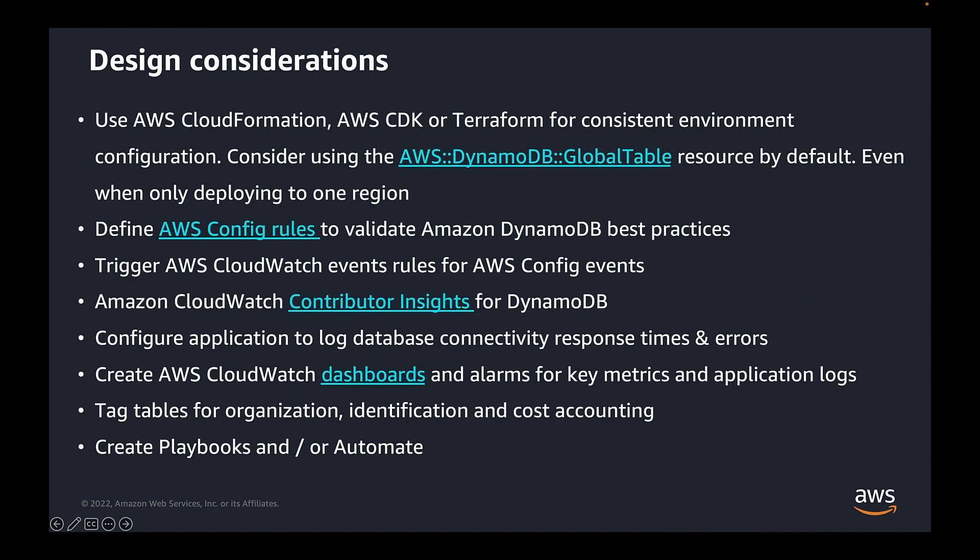When we came up with a list of topics for the operational excellence pillar, we defined the following design considerations. Use infrastructure as code wherever possible. AWS CloudFormation, AWS CDK, or Terraform enable you to manage consistent environment configuration. Use AWS Config to validate all relevant DynamoDB best practices. Use AWS CloudWatch event rules when AWS Config events occur. Make use of Amazon CloudWatch contributor insights for DynamoDB, and also configure your own applications to log critical information on topics like DynamoDB connectivity, response times, and errors.